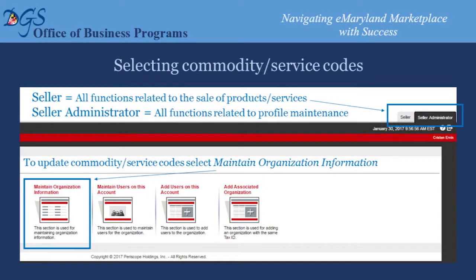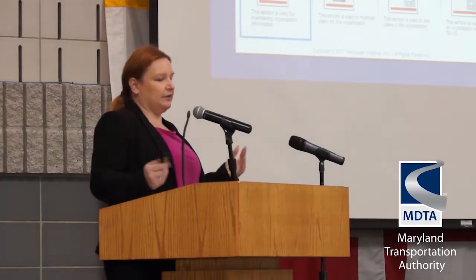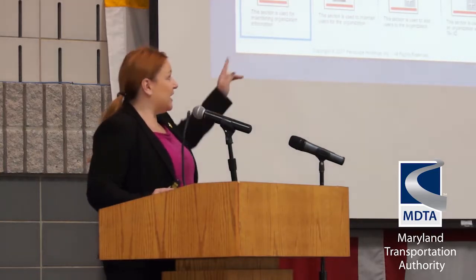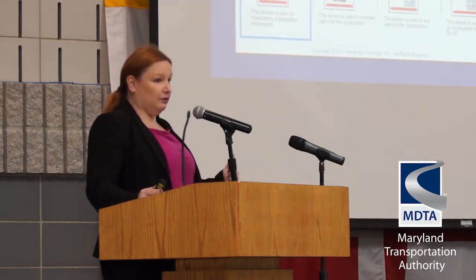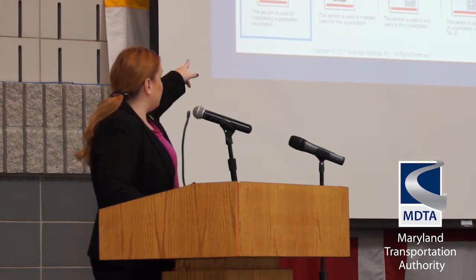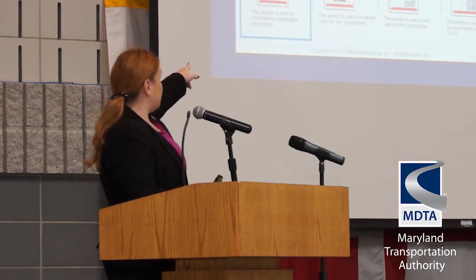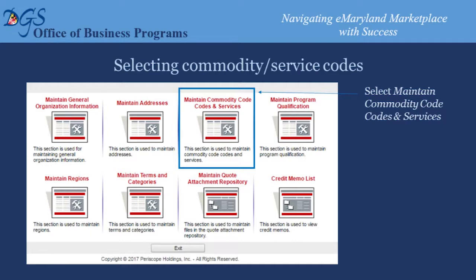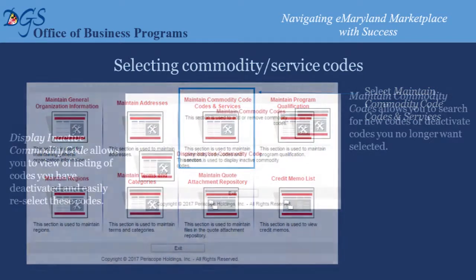For those of you who are already registered, when you log into your profile you'll see something similar to this. In the upper right-hand corner you'll see tabs for Seller and Seller Administrator. You sell things or you maintain your business profile. The Seller Administrator tab is where anything related to your profile can be changed — commodity codes, contact information, and so forth. For this demonstration I'm going to show you the commodity codes. Click on the box highlighted in blue to get started. The next screen that appears has a third option at the top for your actual commodity codes.